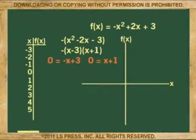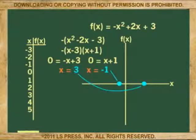We solve both binomials when they are 0 and x equals 3 and x equals negative 1. These are the points where the line crosses the x-axis.